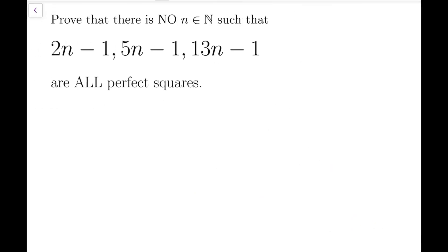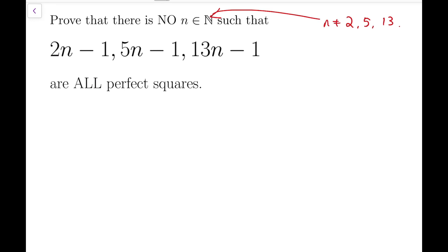To understand why there is a second solution, we have to first look back to the original statement in the IMO. It actually says that n is not equal to 2, 5, or 13. So it's actually very natural for us to try what would happen when n equals 2, 5, or 13, to get some kind of motivation.